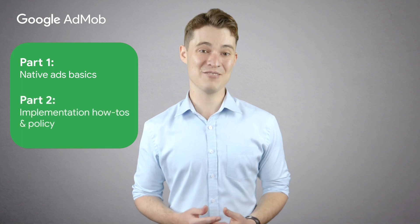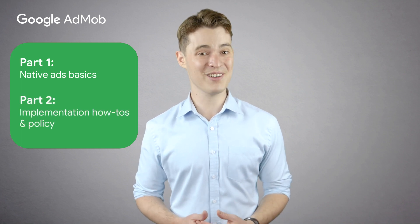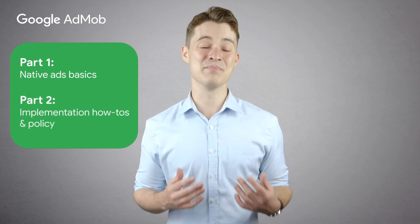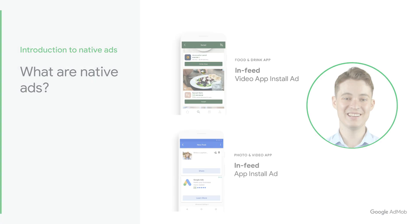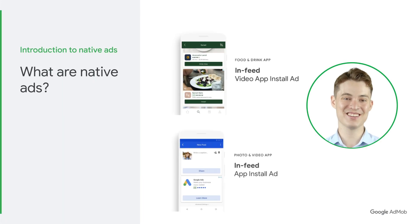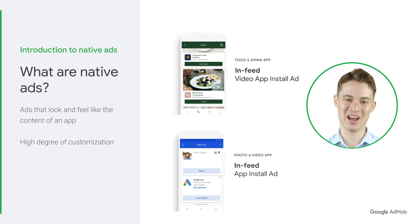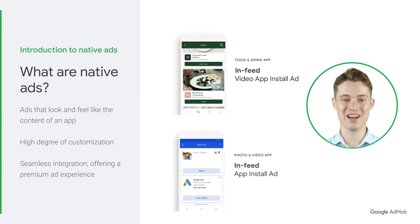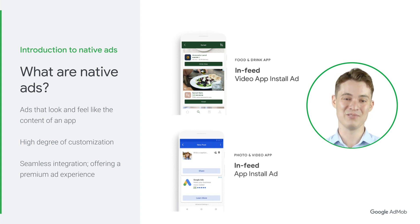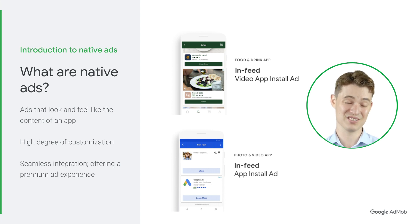The second part will focus on implementation of native ads and important policy reminders. Native ads are ad units you can design to match the look and feel of your app's content. That's why we call them native — they seamlessly integrate into your app. Using AdMob, you can build and deploy native ads in your app and deliver a premium ad experience to your users.